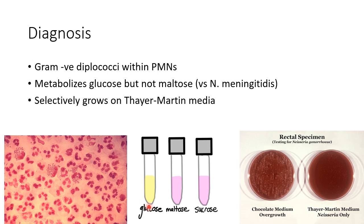In contrast, Neisseria meningitidis oxidizes both glucose and maltose. A mnemonic to remember this is: G for gonorrhea and G for glucose, whereas M for meningitidis and M for maltose.